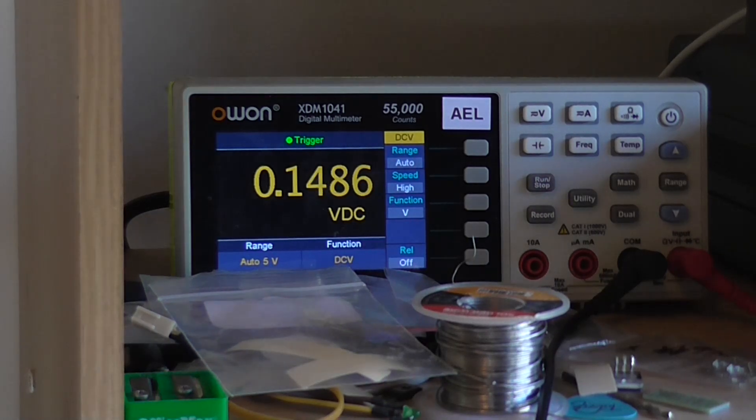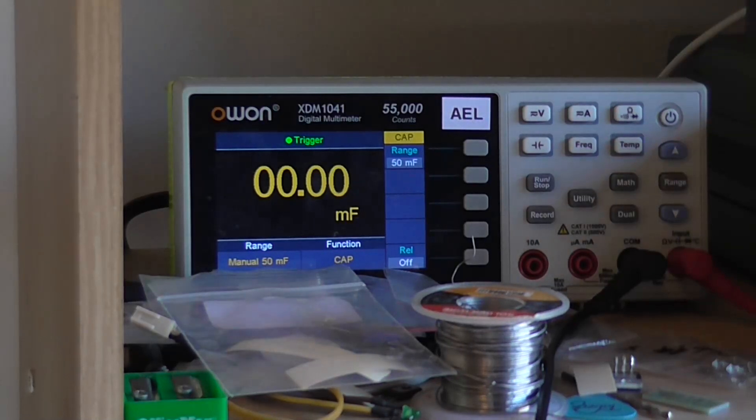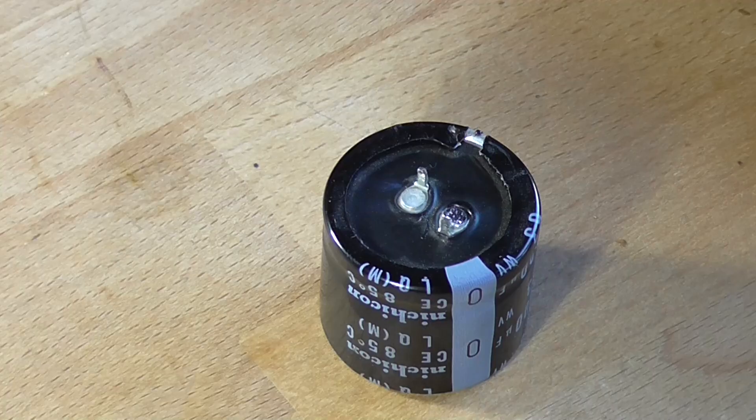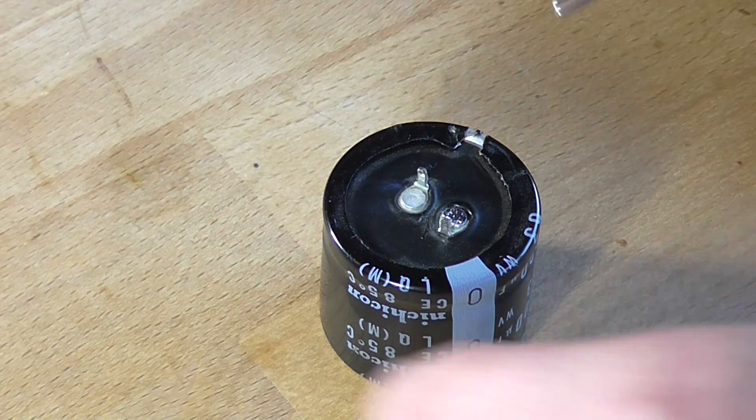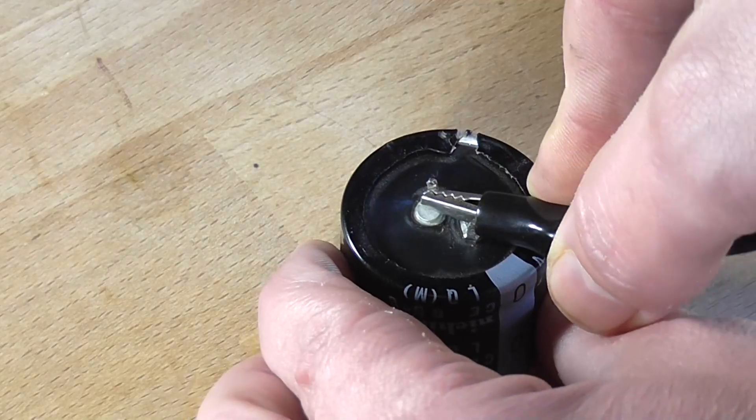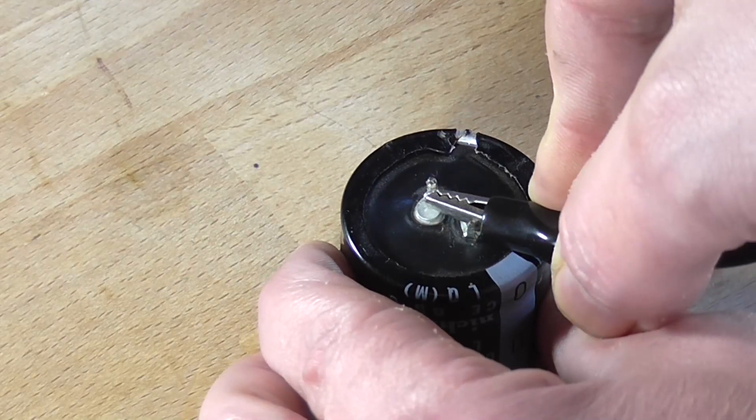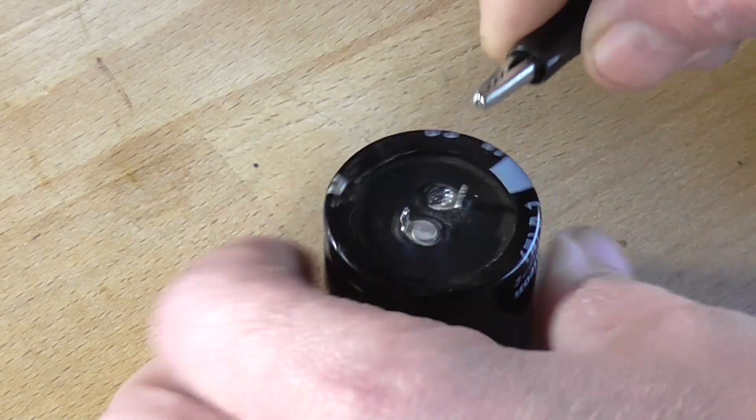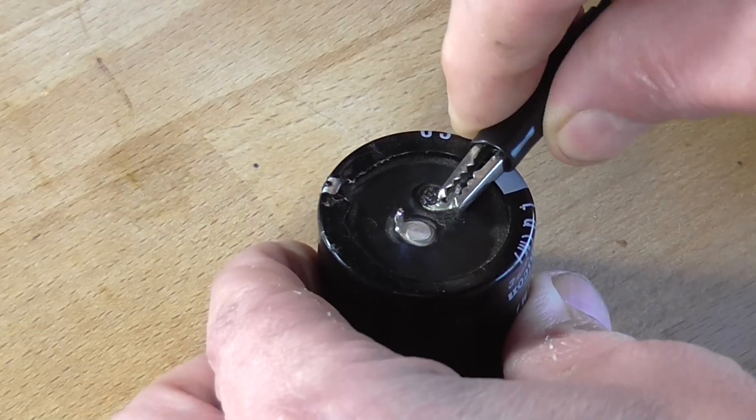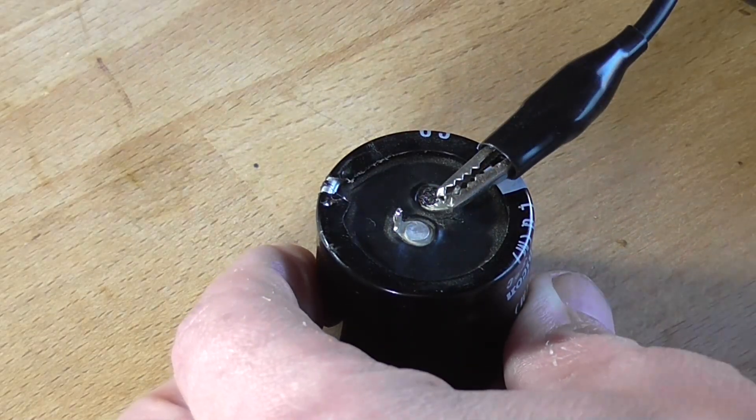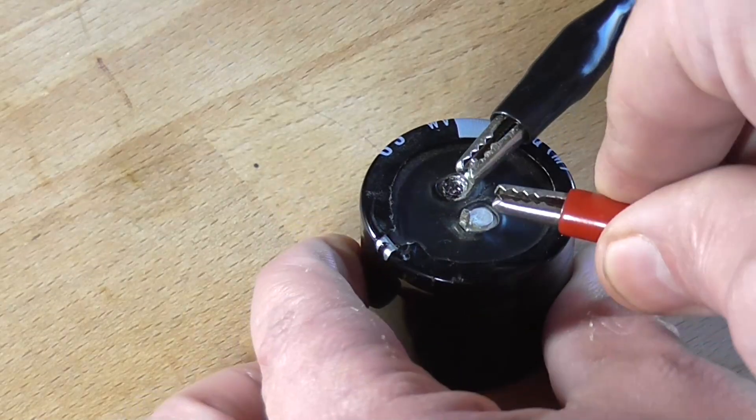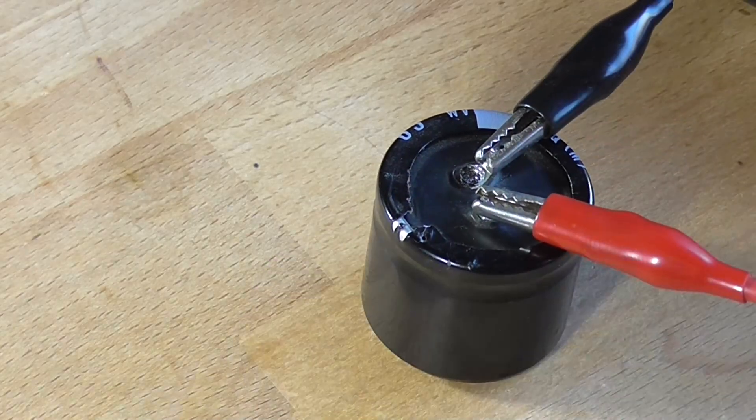I'm going to go back to capacitance. We're still at 50,000 microfarads. Again, just to make sure, I'm going to short the leads of the capacitor to make sure it is discharged. I'm going to connect the multimeter back across the capacitor and now measure its capacitance.